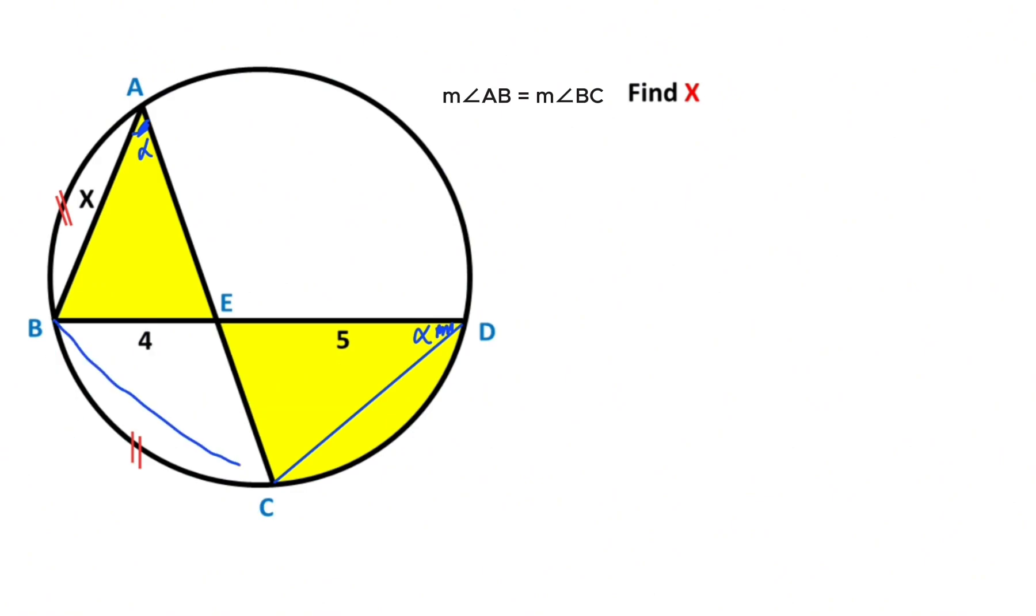After that, if we connect point B and point C like this, you notice that the measure of these two arcs are equal. That means here must be equal alpha.